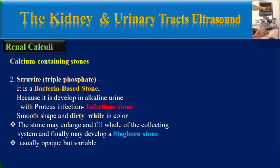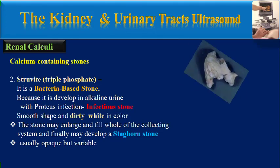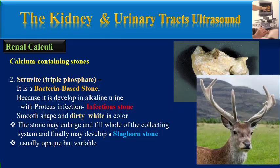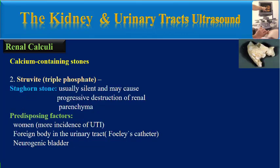Struvite stones are bacterial-based stones because they develop in an alkaline environment with protease infection, and are known as infectious stones. They have a smooth shape and dirty white color. This stone may enlarge and fill the whole collecting system and finally develop into a staghorn stone, usually opaque but variable. Staghorn stones are usually silent and may cause progressive destruction of renal parenchyma.